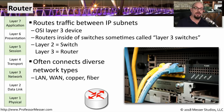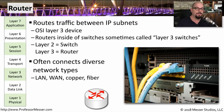Routers will often connect different types of network topologies. On one side, you might have an ethernet network running over fiber, and on the other side of the router might be a wide area network running over copper.